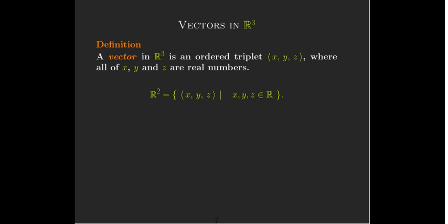So a vector in R3 is an ordered triplet, triplet meaning there's three components there, where all of the components are real numbers. And R3 may be called Euclidean three space, three space, or just three space, or simply space. In that case, you understand that you're talking about three spatial dimensions.